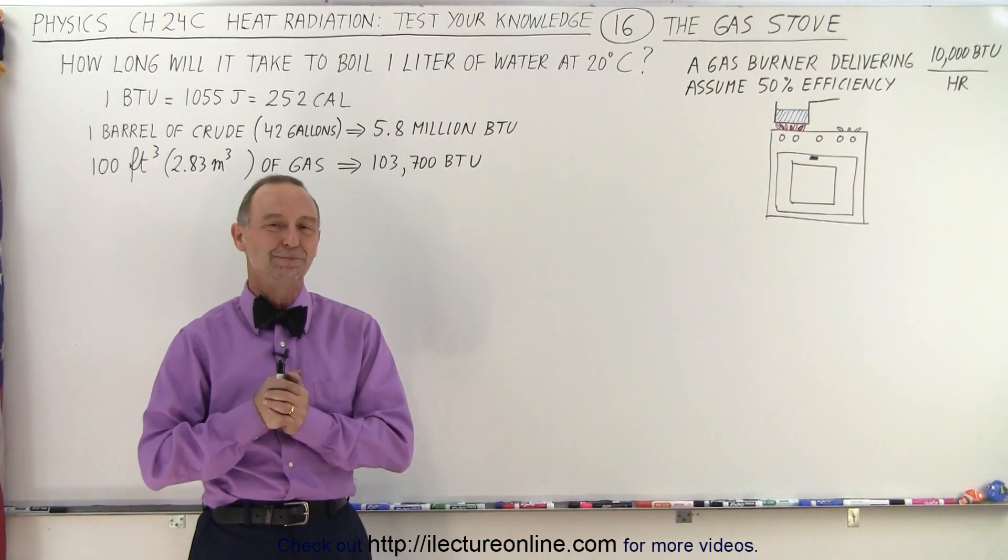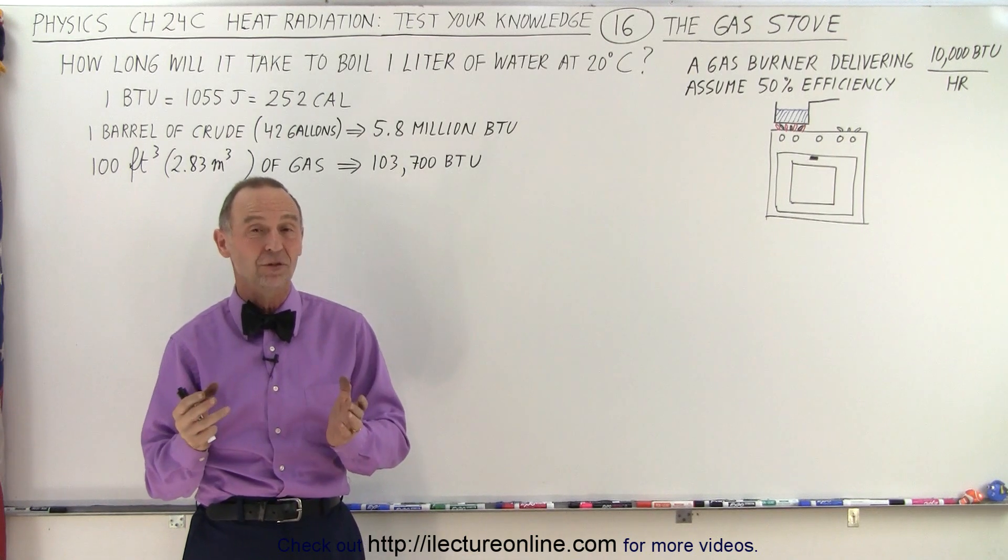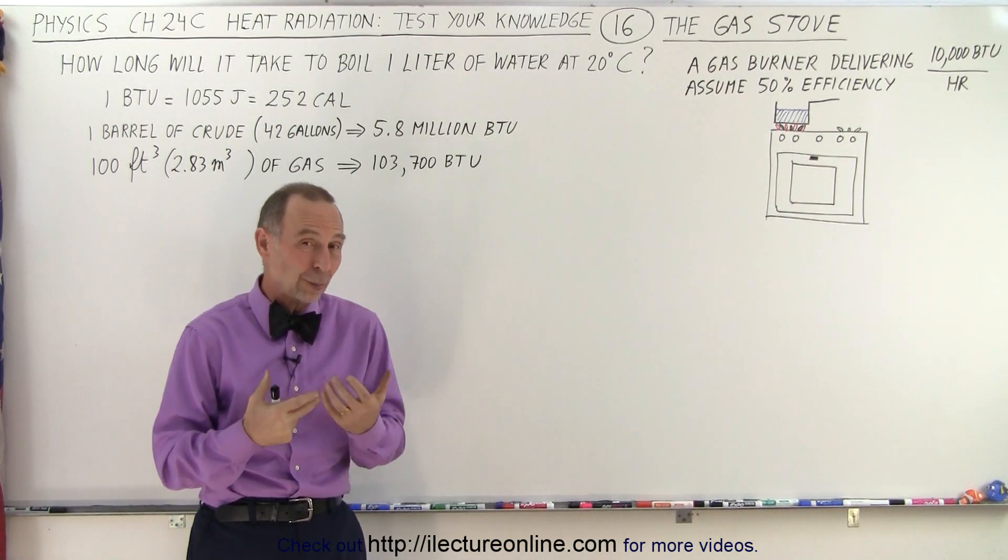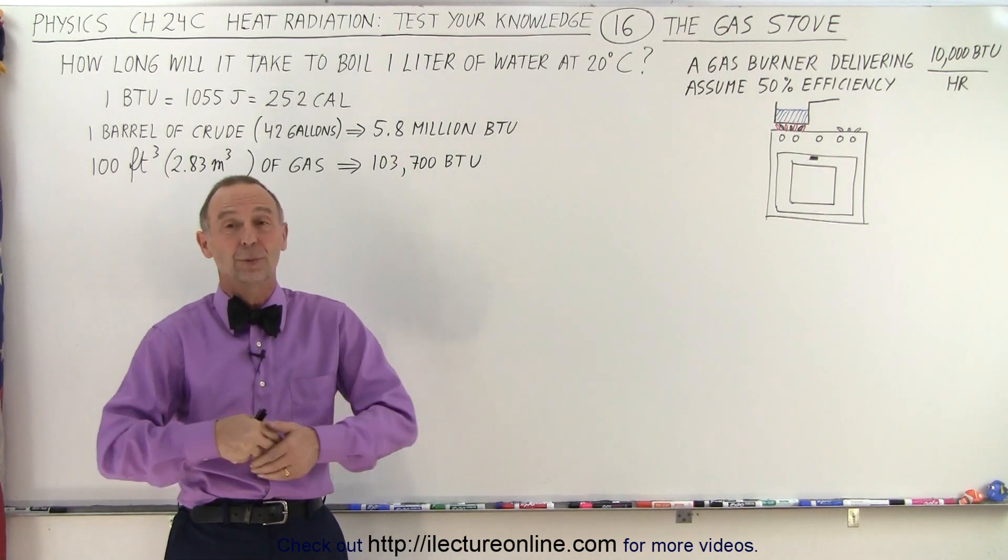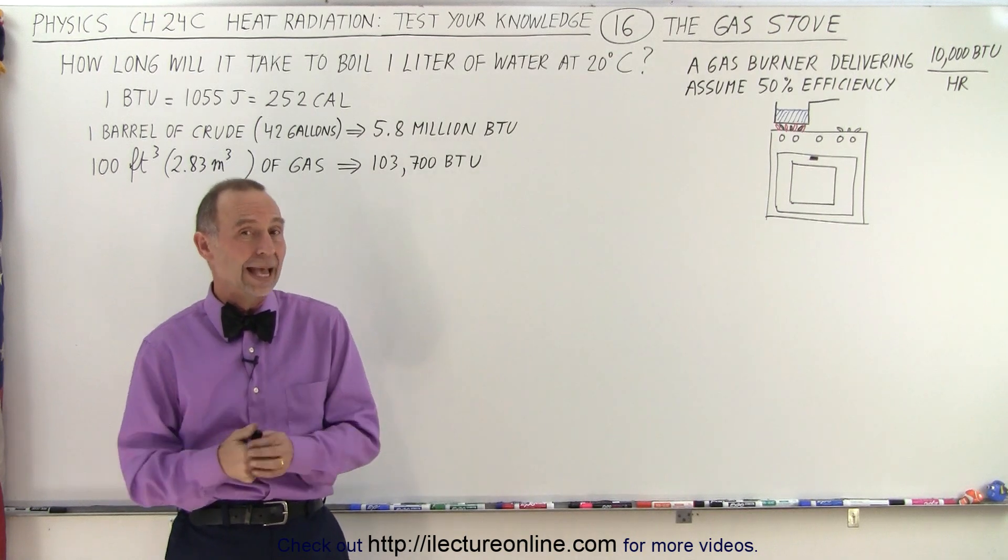Welcome to our lecture online. In the previous video we saw that it took a little over 1 hour and 20 minutes to use a solar oven, a solar cooker, to take 1 liter of water at 20 degrees Celsius and raise it to the boiling point. Now the question is, how fast can we do it with a gas stove?